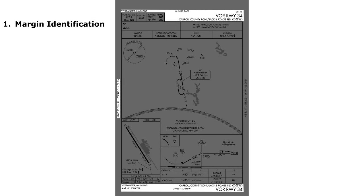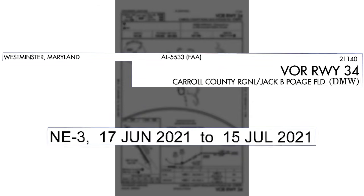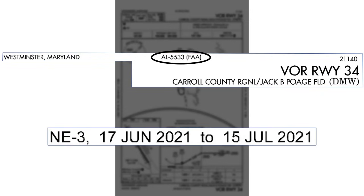To start off, we'll look at the margin identification — this is the first section. The top, bottom, and sides of the chart all contain a margin identifier. We'll see first the city and state that the airport's located in — Westminster, Maryland in this case. Then there's an identifier for a numbering system, and then in parentheses the responsible organization, in this case the FAA.